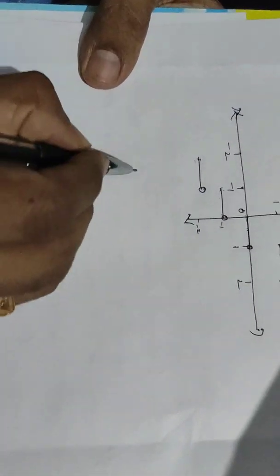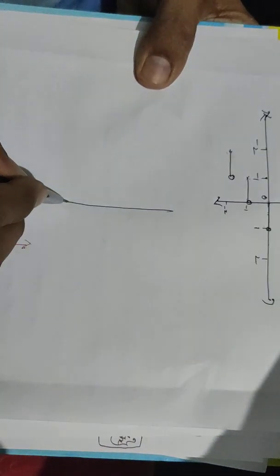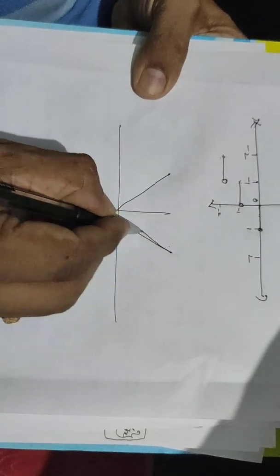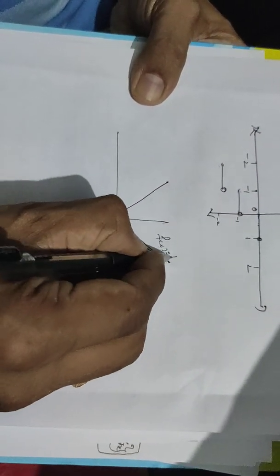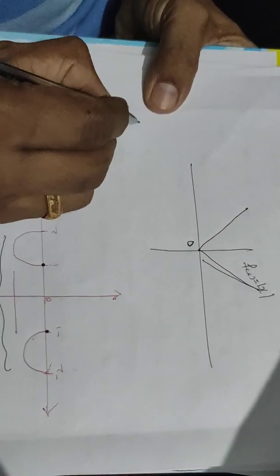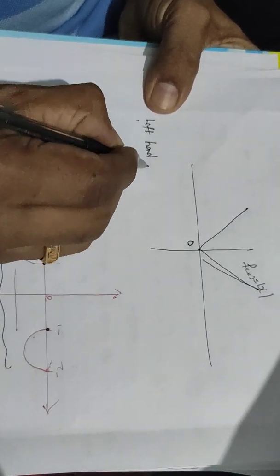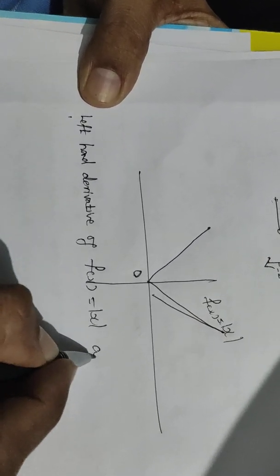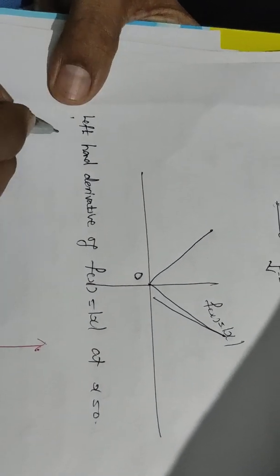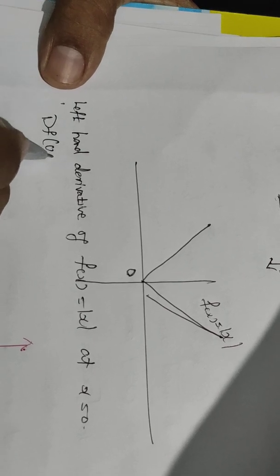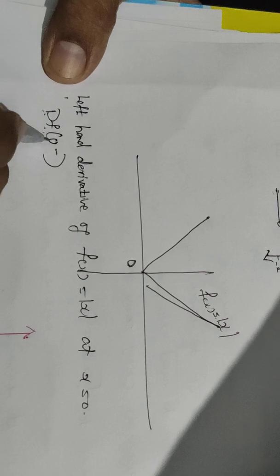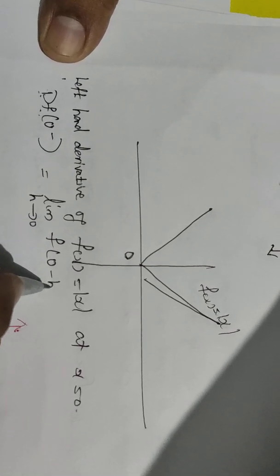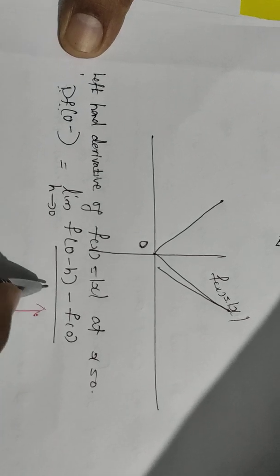What is the left-hand derivative and right-hand derivative? The left-hand derivative of f at 0 is df of 0 minus. The derivative of f at 0 minus is the left-hand derivative, meaning the limit as h tends to 0 of f of (0 minus h) minus f of 0, divided by minus h.